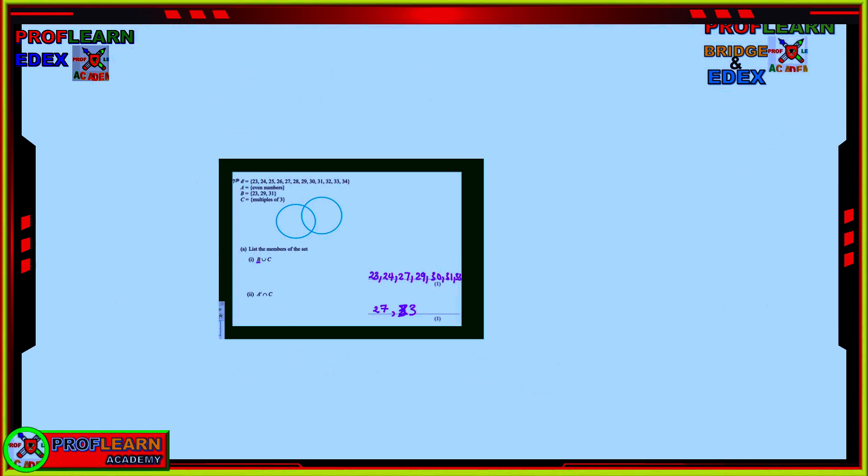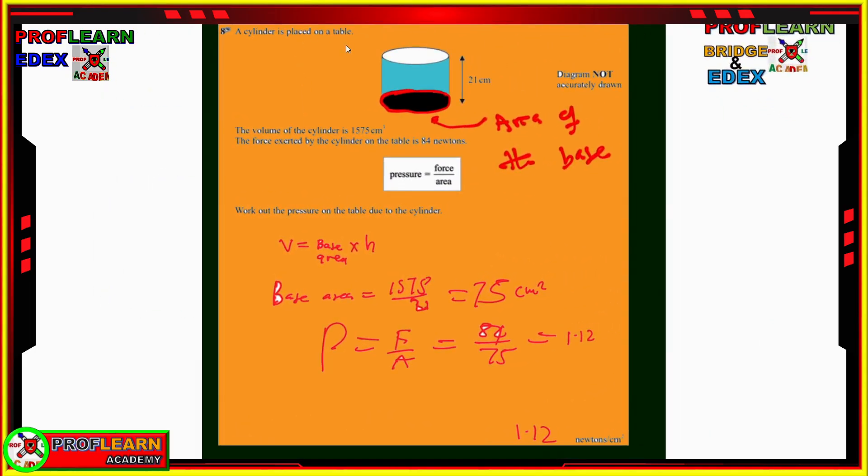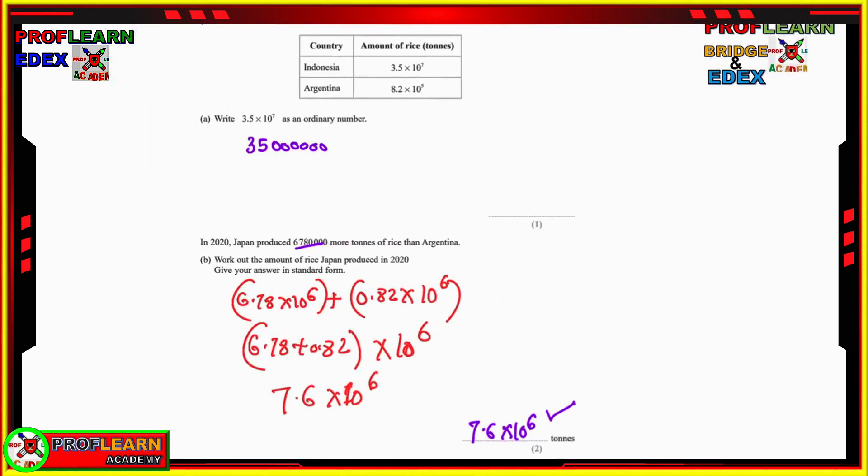Then, we have set a tool. Now, a cylinder is placed on a table. And then, we are told the volume of the cylinder is 1575 cm³. A force exerted by the cylinder on the table is 84 N. Remember, pressure equals force over area. We are supposed to work out the pressure exerted due to the cylinder. In order to work out pressure, we need to know the area of the base. And the area of the base, remember, volume is base area times height. So, since we have the volume, we can be able to find the base area by dividing the volume by the height that was provided here, which is 21. And 1575 divided by 21 gives us 75 cm². Then, for us to work out pressure is the force divided by the area, which gives us 1.12 N per cm².